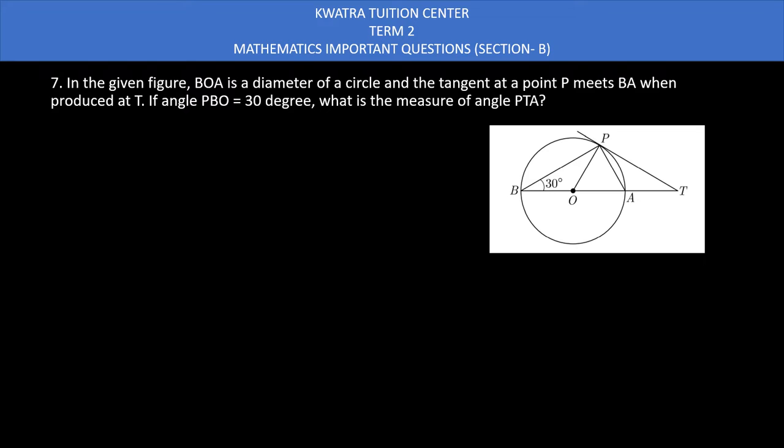In this question it is given that BOA is the diameter of a circle and the tangent at point P meets BA when produced at T. If angle PBO is 30 degrees, what is the measure of angle PTA? We have to find this angle PTA. Note that angle PBO is 30 and PBA is also written, because O and A are in the same straight line. So it can be written as PBO or as PBA as 30 degrees.